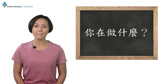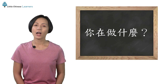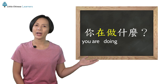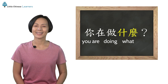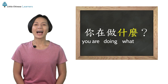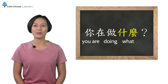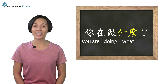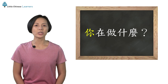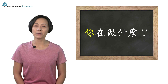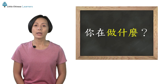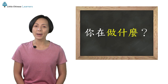你在做什么? That means 'You are doing what?' That's how we ask people what they're doing in Chinese. The subject 你 is at the very front, and the question 做什么 is at the end.